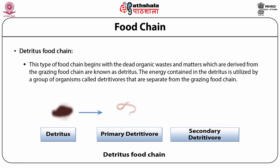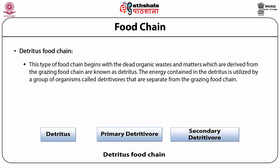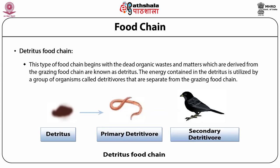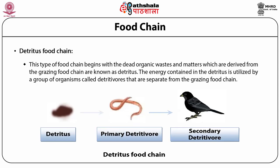The detritus food chain characterizes an extremely important component of energy flow in the ecosystem. The organisms of the detritus food chain include bacteria, protozoa, slime mold, fungus, insects, crustaceans, rotifers, centipedes, molluscs, nematodes, annelids, and also some vertebrates.